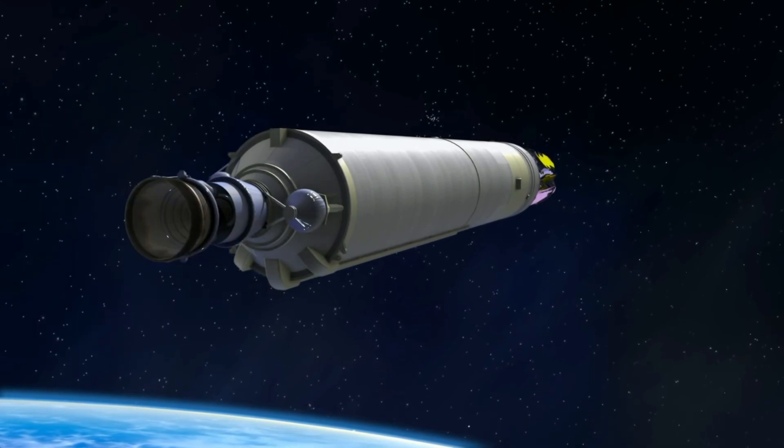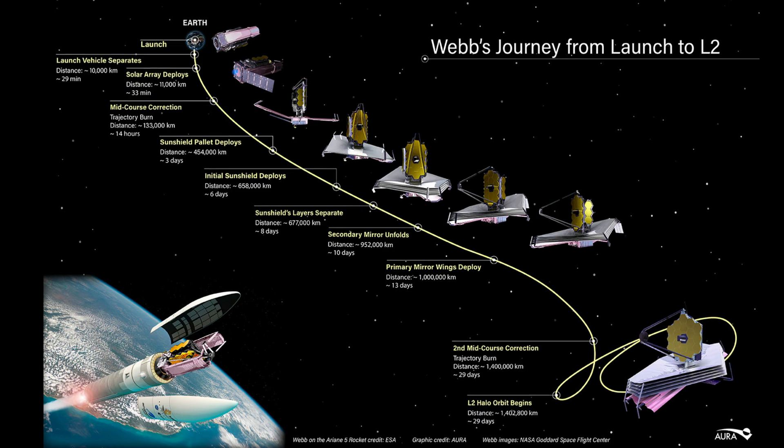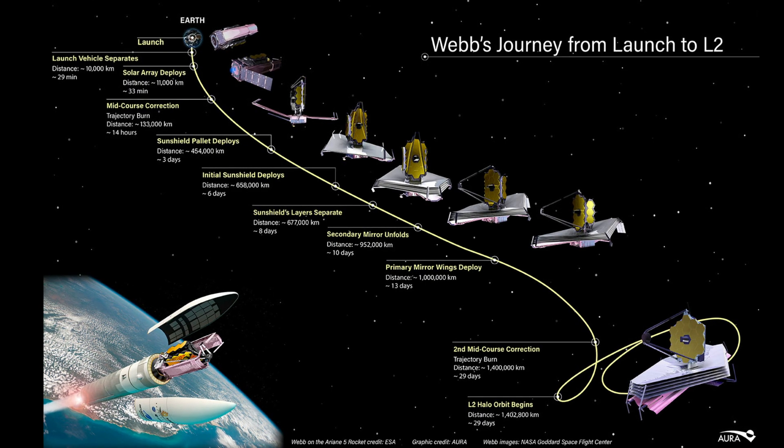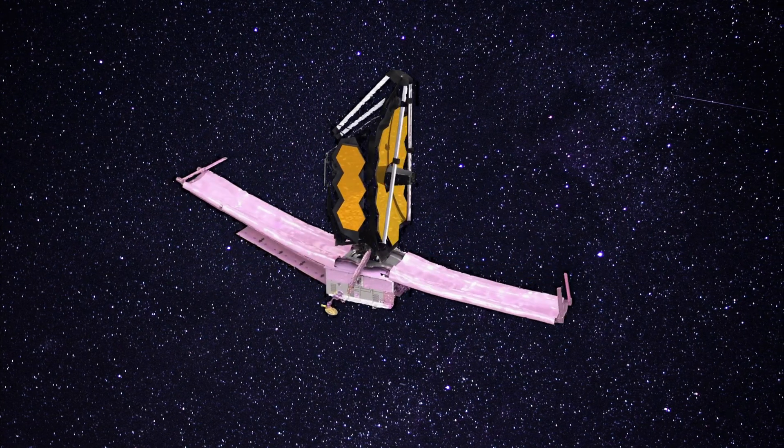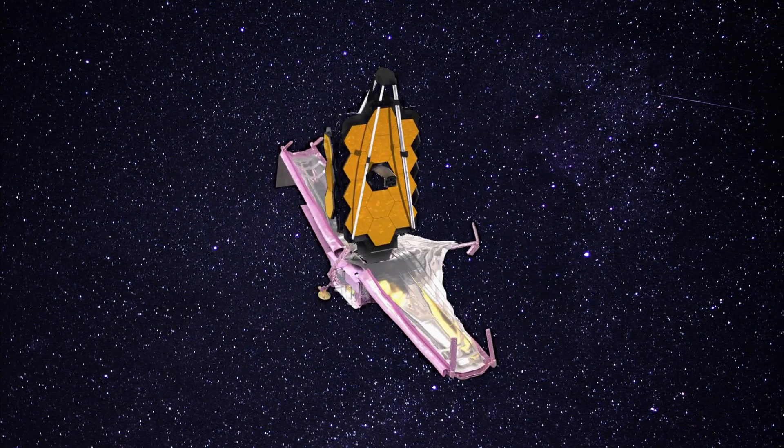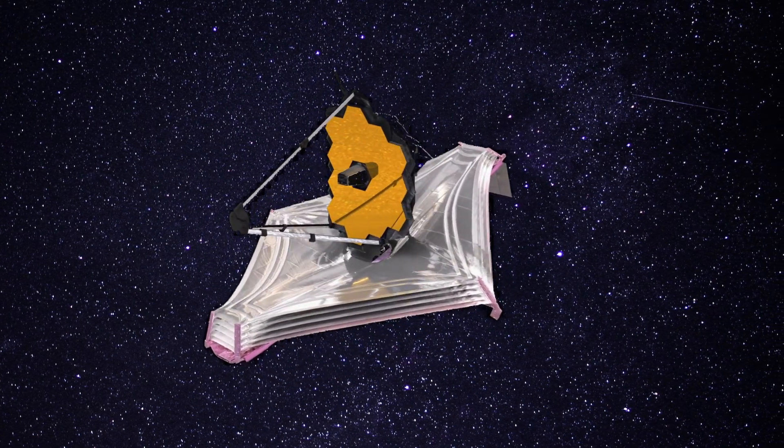And about 28 minutes after liftoff, Webb detached itself from the launch vehicle and began the most complex sequence of deployments ever attempted in a single space mission. It had approximately 344 single points of failure during its 30-day deployment sequence, and if just one of them had failed, the entire telescope would not have been able to function.